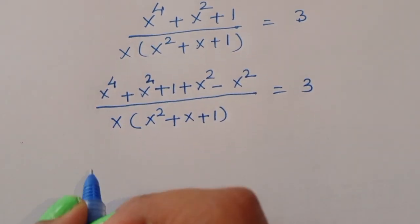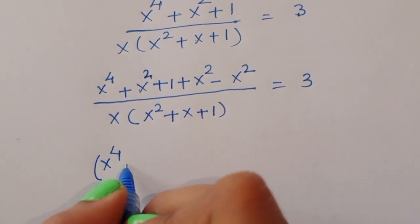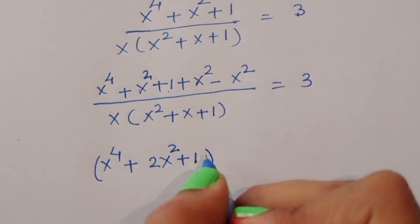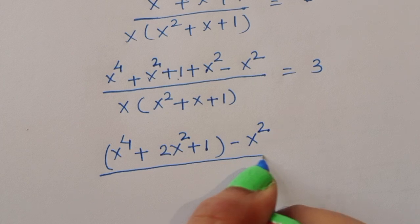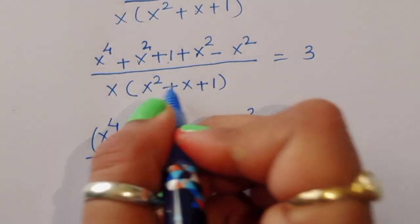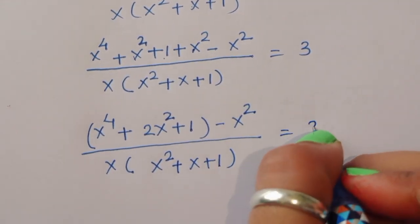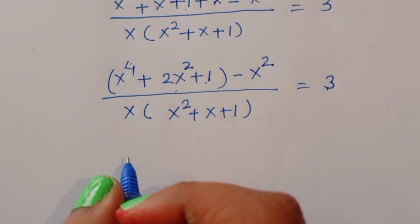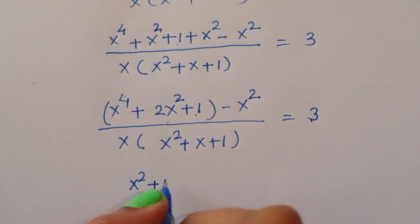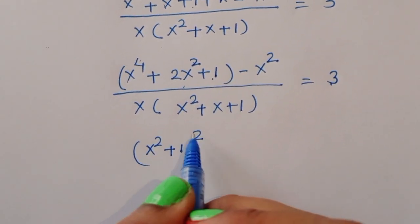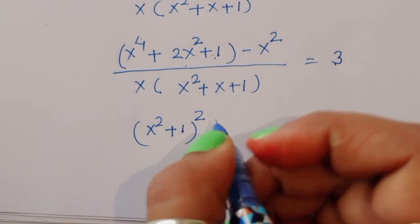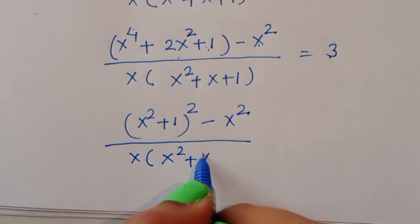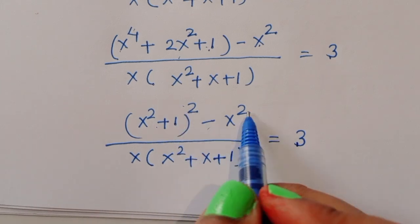We regroup the numerator as x⁴ + 2x² + 1 minus x², which uses the formula (a + b)² = a² + 2ab + b², so x⁴ + 2x² + 1 becomes (x² + 1)². The expression is now (x² + 1)² minus x², divided by x times (x² + x + 1) equals 3.